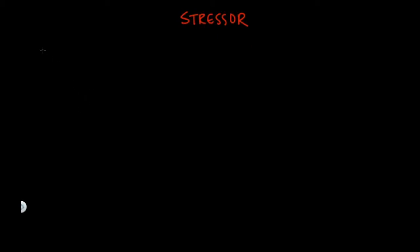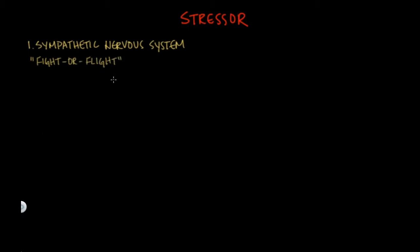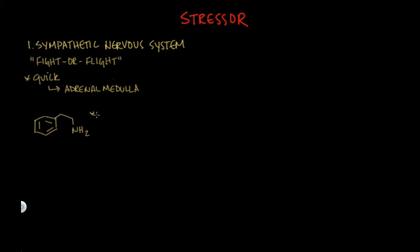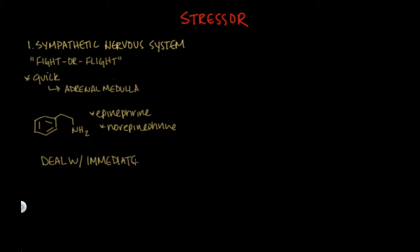Let's say we are exposed to some stressor — say, a shark at the beach. The first thing that happens is the activation of your sympathetic nervous system, or the fight-or-flight response. The effects of the sympathetic nervous system are very quick, on the order of seconds. During this time, your adrenal medulla is releasing epinephrine and norepinephrine. This is able to happen so quickly because these hormones are already pre-made and stored in vesicles, waiting for the right release signal, and they communicate with the rest of your body to deal with the immediate threat.